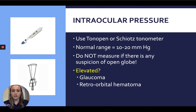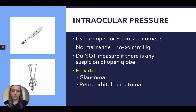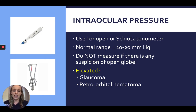The last vital sign is intraocular pressure. The device on the top is the Tono-Pen, and the device on the bottom is the Schiotz tonometer — you can use either to check intraocular pressure. The normal range is 10 to 20. Importantly, do not check intraocular pressure if there is any suspicion of an open globe injury, since applying pressure with either device could worsen the situation. If intraocular pressure is significantly elevated, consider glaucoma or a retro-orbital hematoma on your differential.